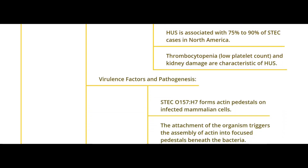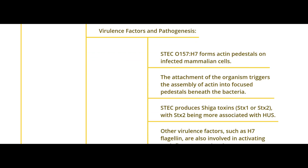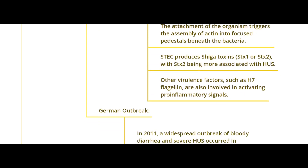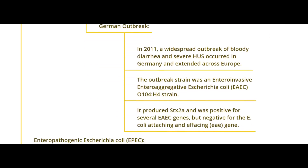Thrombocytopenia, low platelet count, and kidney damage are characteristic of HUS. The STEC O157:H7 forms actin pedestals on infected mammalian cells. The attachment of the organism triggers assembly of actin into focused pedestals beneath the bacteria. It then produces Shiga toxin, with Shiga toxin 2 being more associated with HUS, and other virulence factors such as H7 flagellin are involved in activating pro-inflammatory signals.